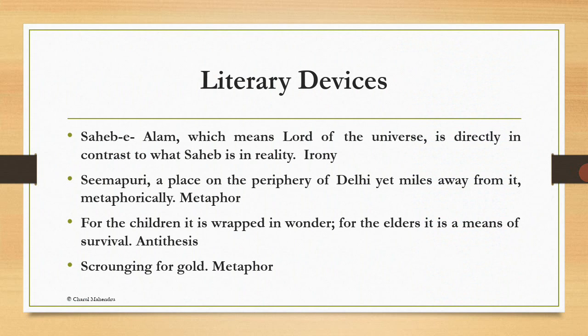Along with the thematic content of Part A, these are some of the literary devices. Sahib-e-Alam, which means lord of the universe, is directly in contrast to what Sahib is in reality — this is irony. Simapuri, a place on the periphery of Delhi, yet miles away from it — metaphorically, this is a metaphor. For the children, it is wrapped in wonder; for the elders, it is a means of survival — this is antithesis.